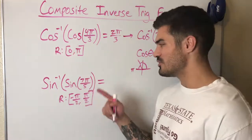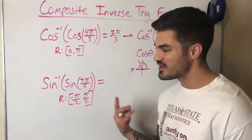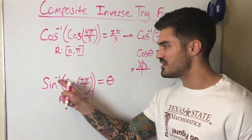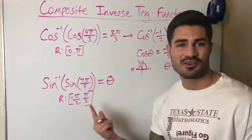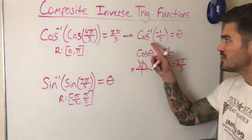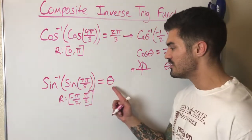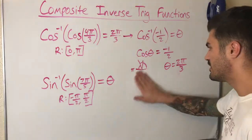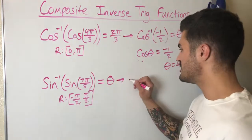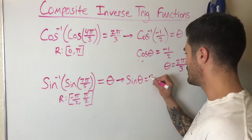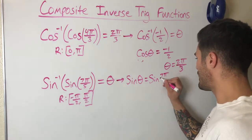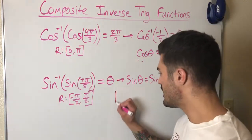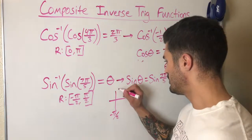In this example we don't know what sine of 7π/5 is without a calculator, so we do something different. We know we're looking for some angle theta from this inverse function. I can rewrite this as: sine of what angle equals sine of 7π/5? That angle must be within the range of sine inverse — between negative π/2 and π/2.